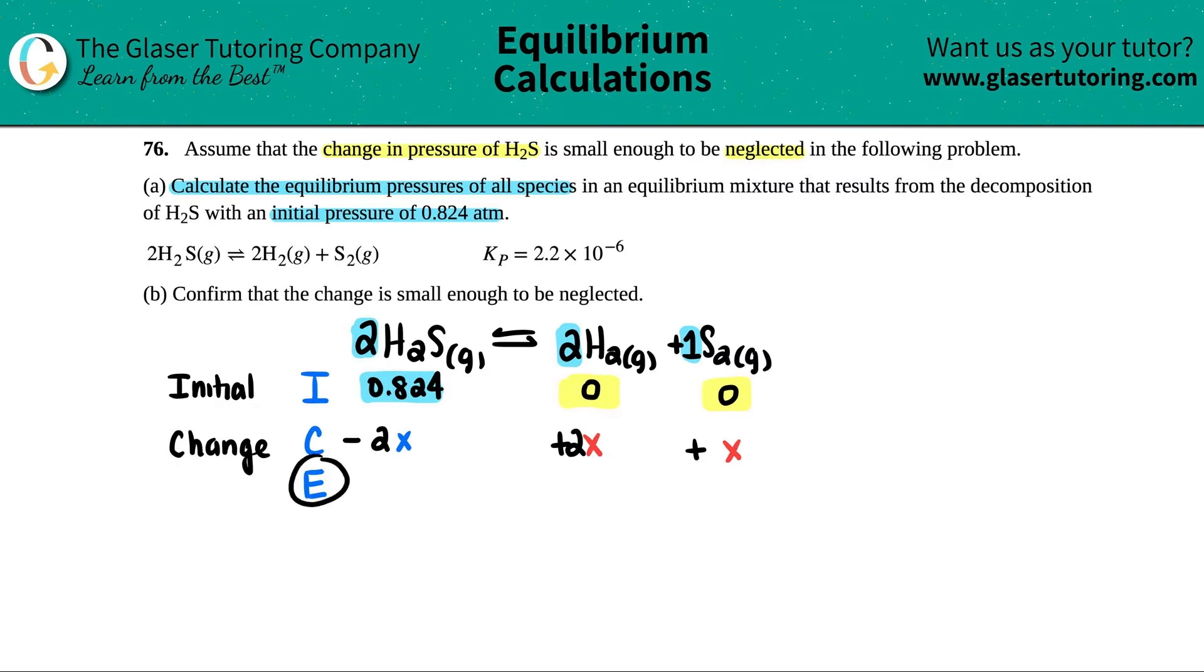Now E stands for equilibrium. Equilibrium is when you have your initial and your change coming together. So 0.824 minus 2X is 0.824 minus 2X, right? 0 plus 2X is the 2X. And then 0 plus X is just the X. This is a really, really handy tool, the ICE table, to get your equilibrium values.